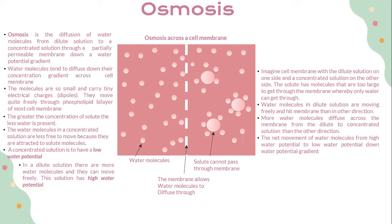You can refer to the diagram as I explain. In a dilute solution, there are more water molecules and they can move freely, so this solution has a high water potential. Imagine a membrane with a dilute solution on one side and a concentrated solution on the other. The solute molecules are too large to get through the membrane, so only water can pass. More water molecules diffuse across the membrane from the dilute to the concentrated solution than in the other direction, resulting in a net movement of water from high water potential to low water potential, down the water potential gradient.